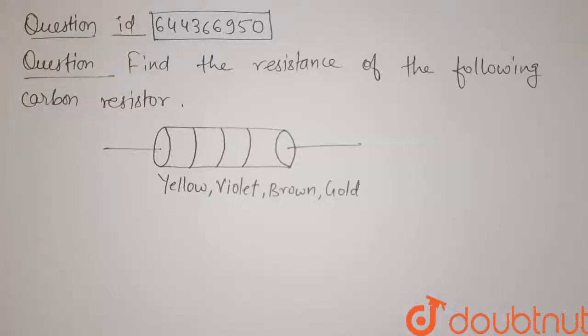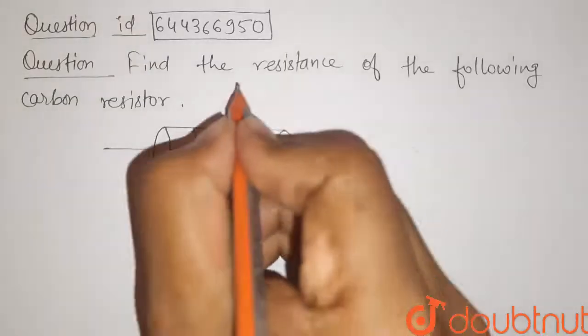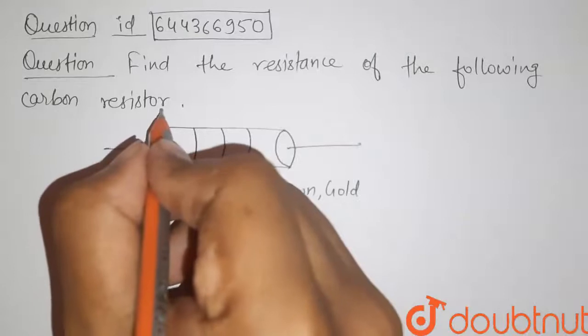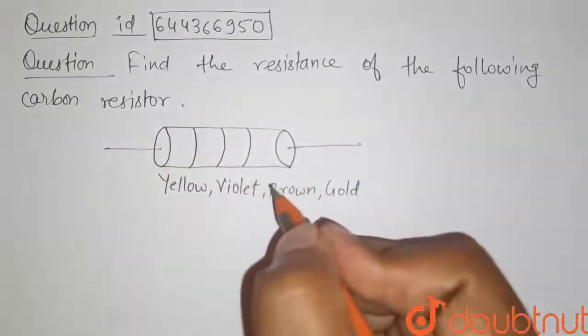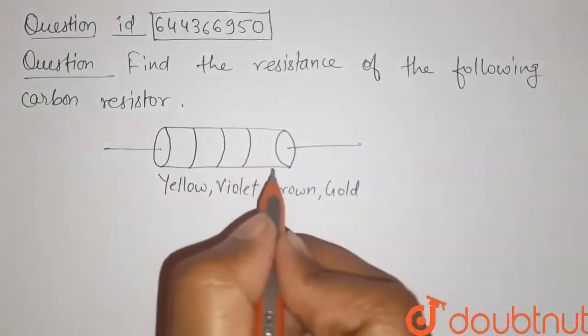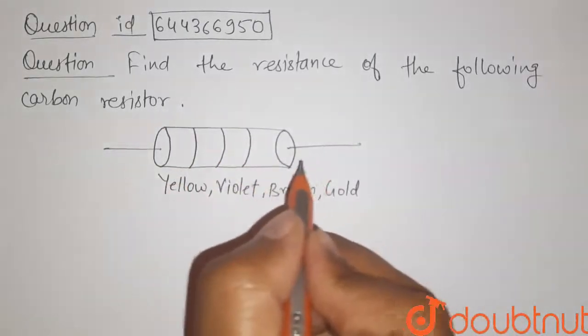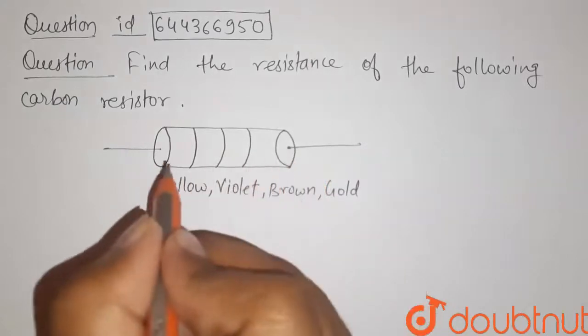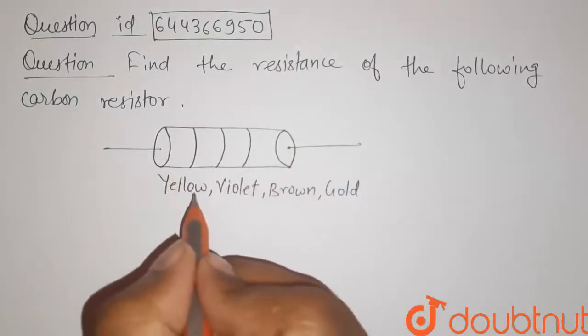Students, here is our question: Find the resistance of the following carbon resistor. So here, this is our given carbon resistor and we have to find its resistance.